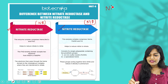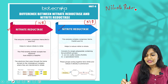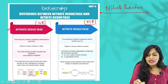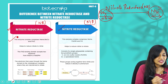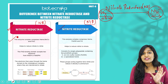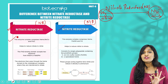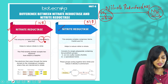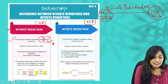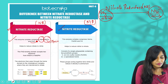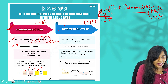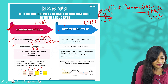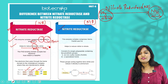Nitrate reductase, written as NR, is the enzyme responsible for converting nitrate into nitrite — that is, NO₃⁻ into NO₂⁻. This enzyme has three domains or complexes: first is heme; second is molybdenum complexed with an organic compound called pterins; and third is FAD. So the three components are FAD, heme, and molybdenum complexed with an organic molecule. The main role of this enzyme is to reduce nitrate (NO₃⁻) into nitrite (NO₂⁻).